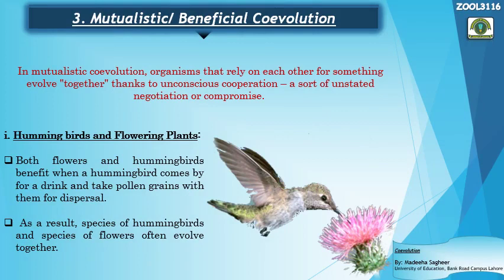The third and last type is mutualistic or beneficial co-evolution. This is the evolution taking place between species that have a mutually beneficial relationship with each other, providing benefits to each other — unlike the previous two types. The definition: in mutualistic co-evolution, organisms that rely on each other for something evolve together, thanks to unconscious cooperation — a sort of unstated negotiation or compromise — such that a change in the trait of one helps the associated species.